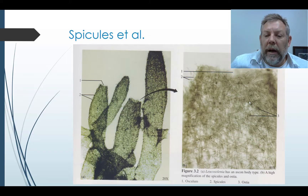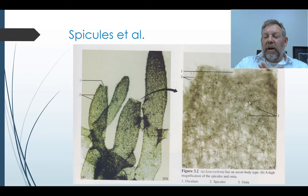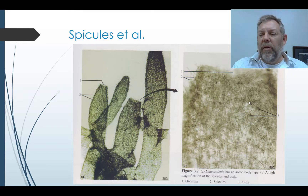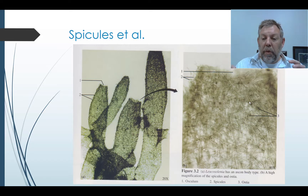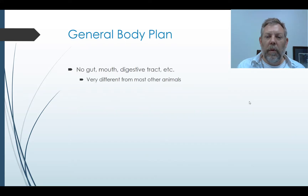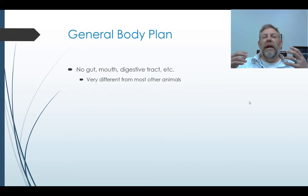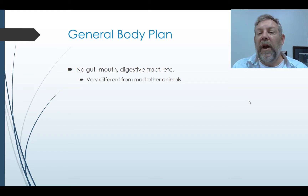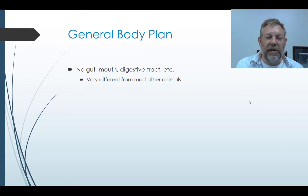Here's another picture showing a sponge zoomed in so you can see this matrix of spicules forming the structure, with pores embedded in it that allow water in. Sponges don't have any kind of symmetry. They don't have a gut, mouth, or digestive tract because they don't have tissues. They're very different from most other animals.